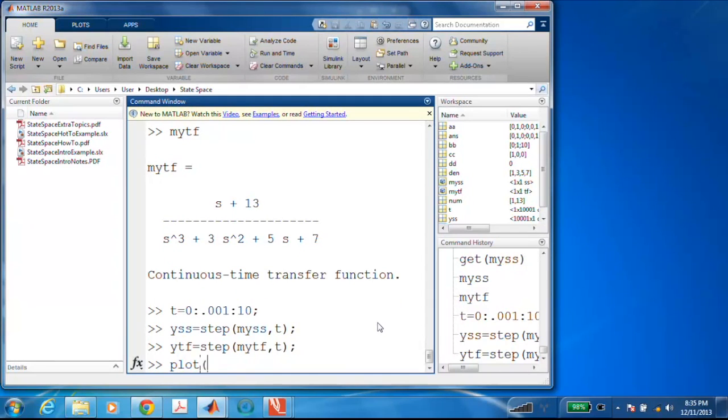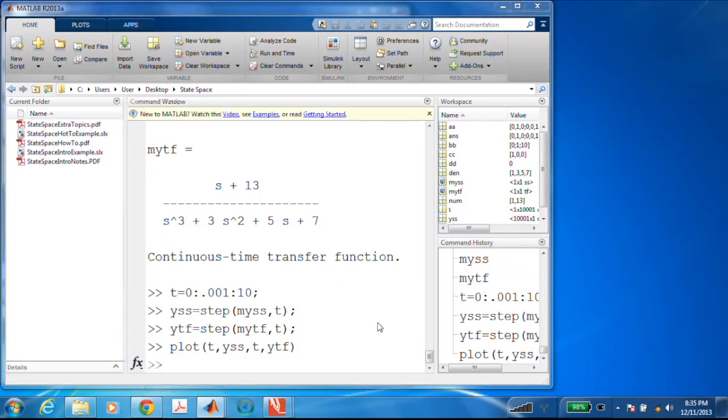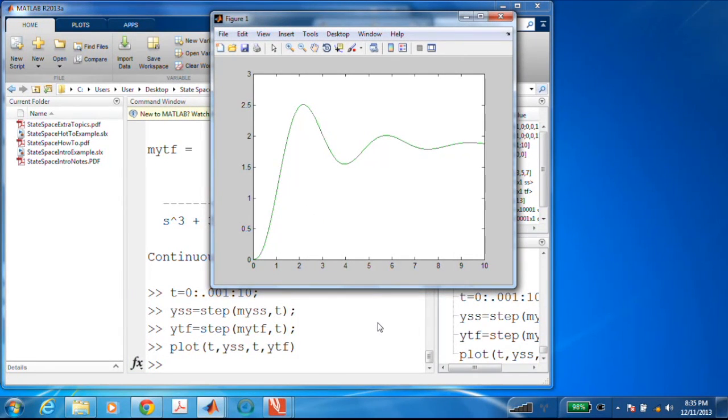And now I could plot T YSS, T T YTF. And look at that. I get a step response that looks like a single trace, but there's actually two there. They're just identical. So there's essentially no error between those two step responses. So I guess from that, we can conclude that those two, the state space realization is correct related to that transfer function. It's just a quick sanity check.